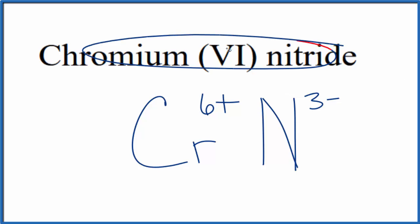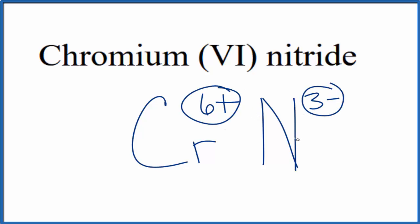Since chromium (VI) nitride here is neutral, it doesn't say ion after it. These charges need to add up to zero, give us a net charge of zero.